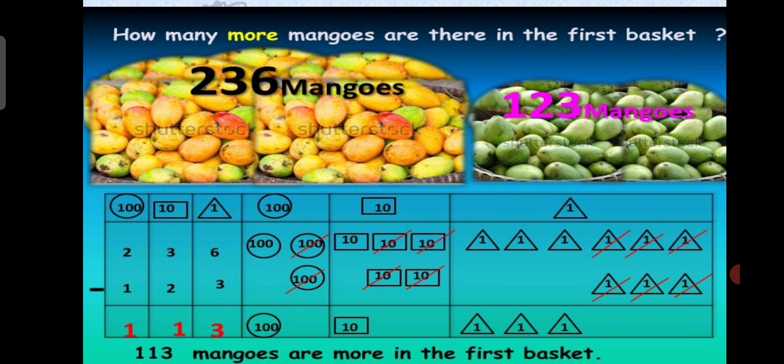What is the question? We have to compare how many more mangoes are there in the first basket. The child is able to understand by seeing the numbers that the first one is greater, but how much is it? We are doing simple activities here. If there are two hundreds, here 236 means we are simply splitting the number 200 into 100, 100. So we have taken 100, 100, two times. And in the second number 123, we have taken just 100. In the same way, we have split 36 into 30 plus 6 means 3 times tens, 1, 2, 3 and 6 times ones. You can count 1, 2, 3, 4, 5, 6.